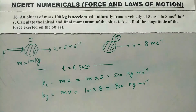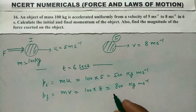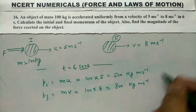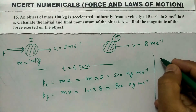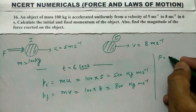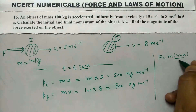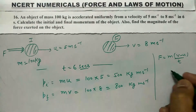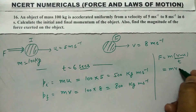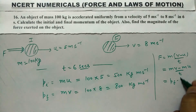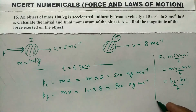अब उसने पूछा है force निकालने के लिए। Newton's Second Law के अनुसार: F = M(V − U)/T। यहाँ से F = (MV − MU)/T = (PF − PI)/T। (Now for force, as per Newton's Second Law: F = M(V−U)/T = (PF − PI)/T.)